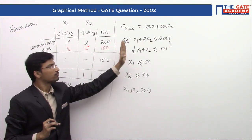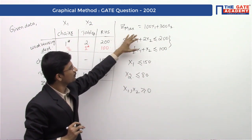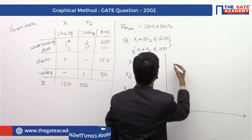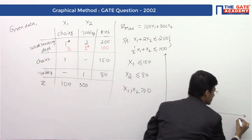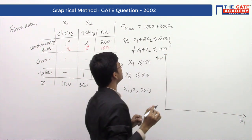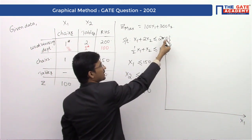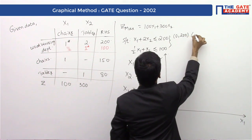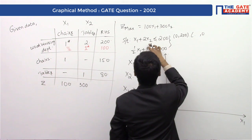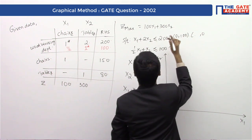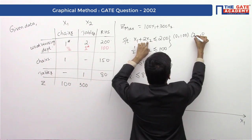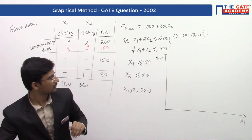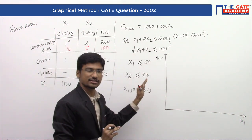We have the formulation with the objective function and constraints. Now let's draw these constraints on a graph. This will be our x1 axis and x2 axis. We can take either form of the first constraint since both are the same. If x1 = 0, then x2 = 100. If x2 = 0, then x1 = 200. Also, x1 = 150 and x2 = 80. Let's plot these constraints.